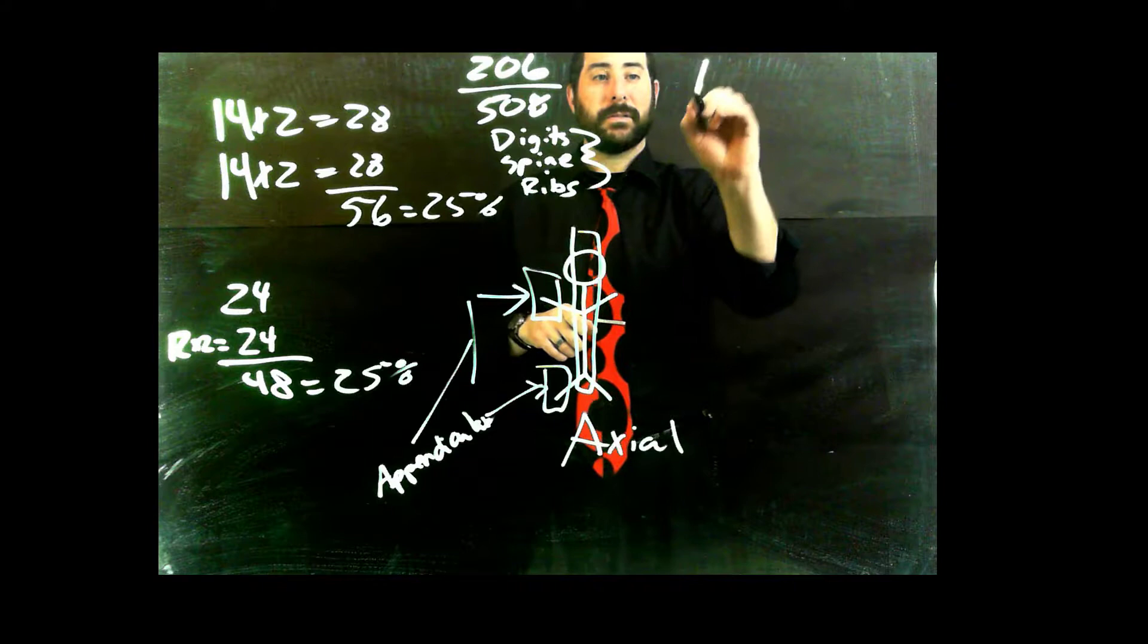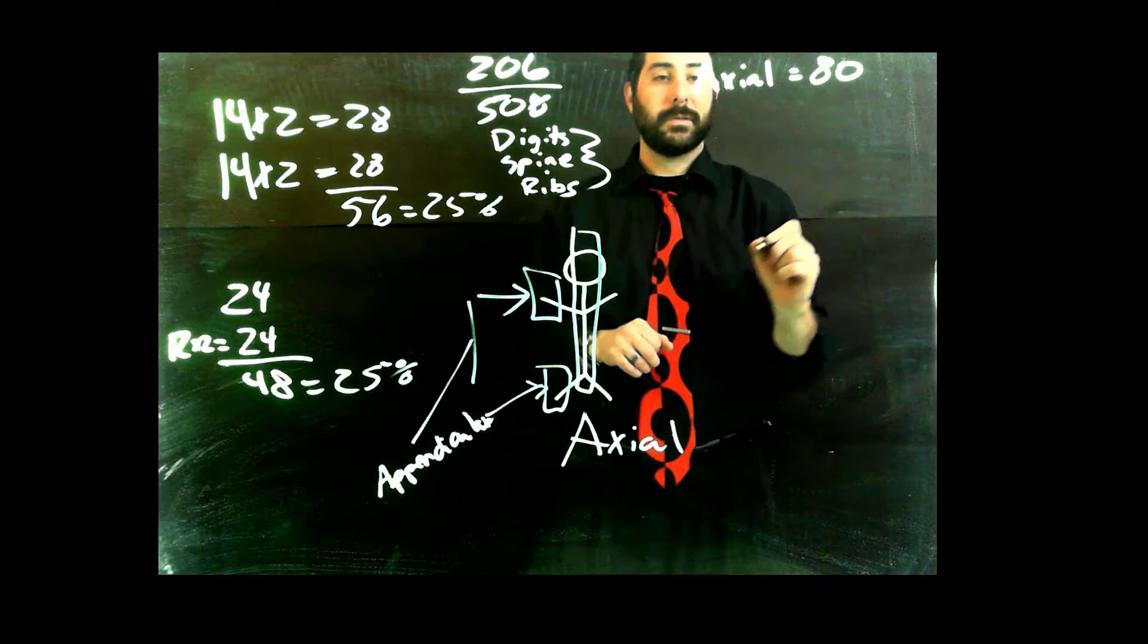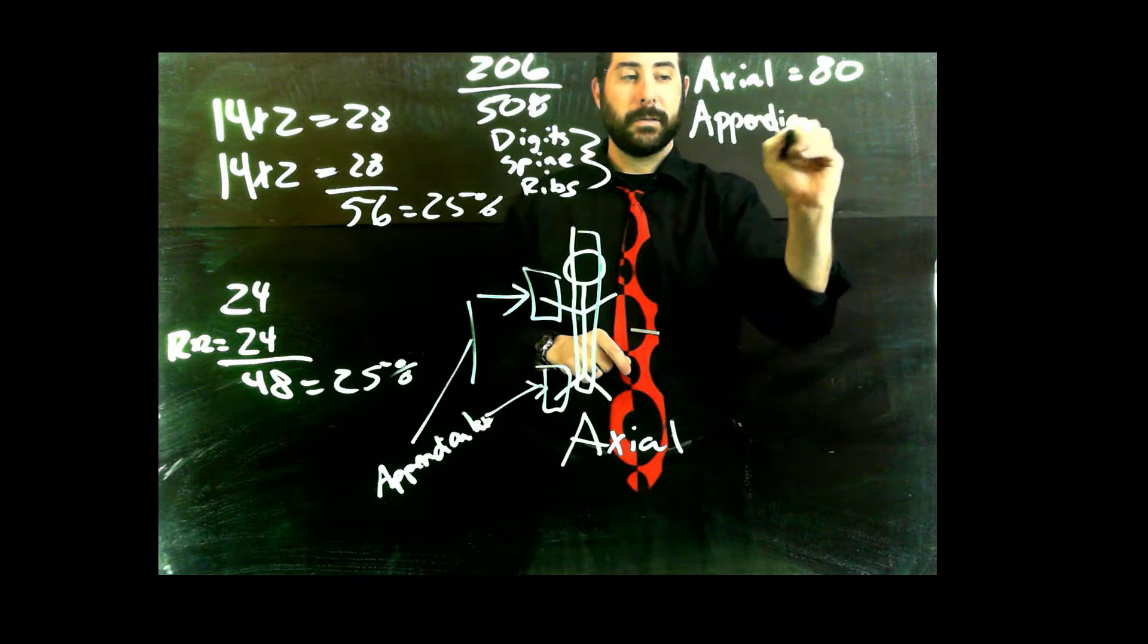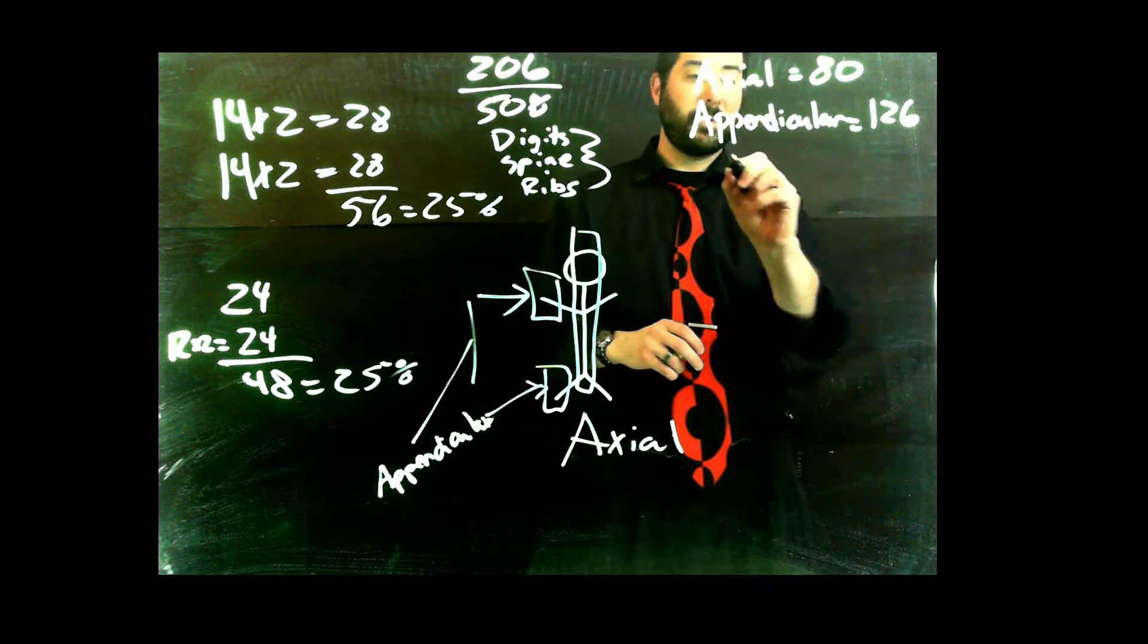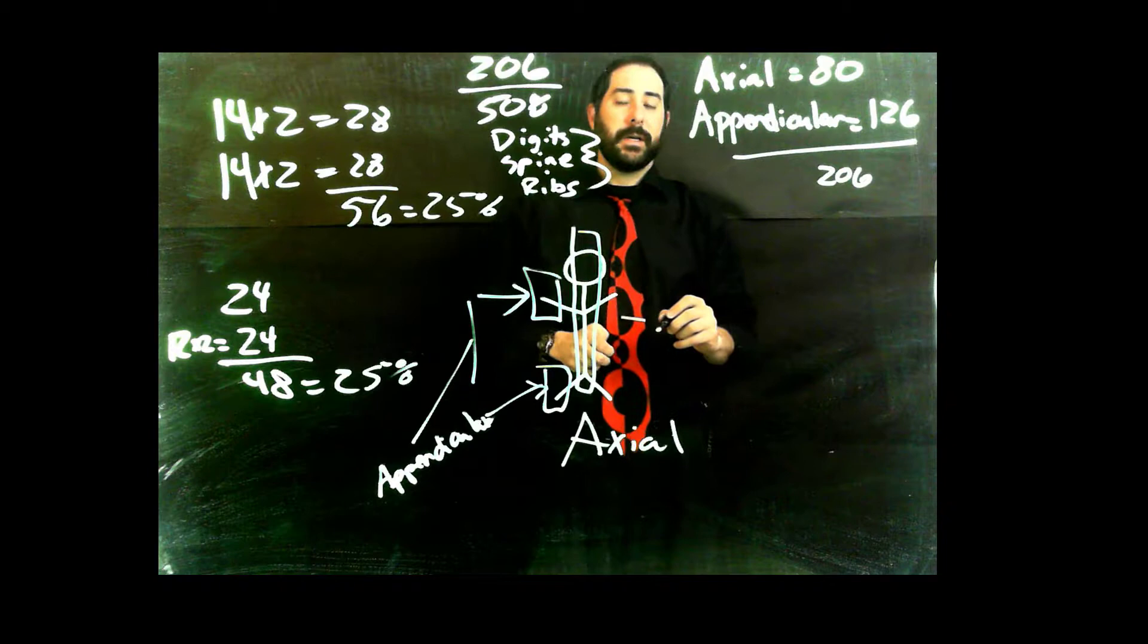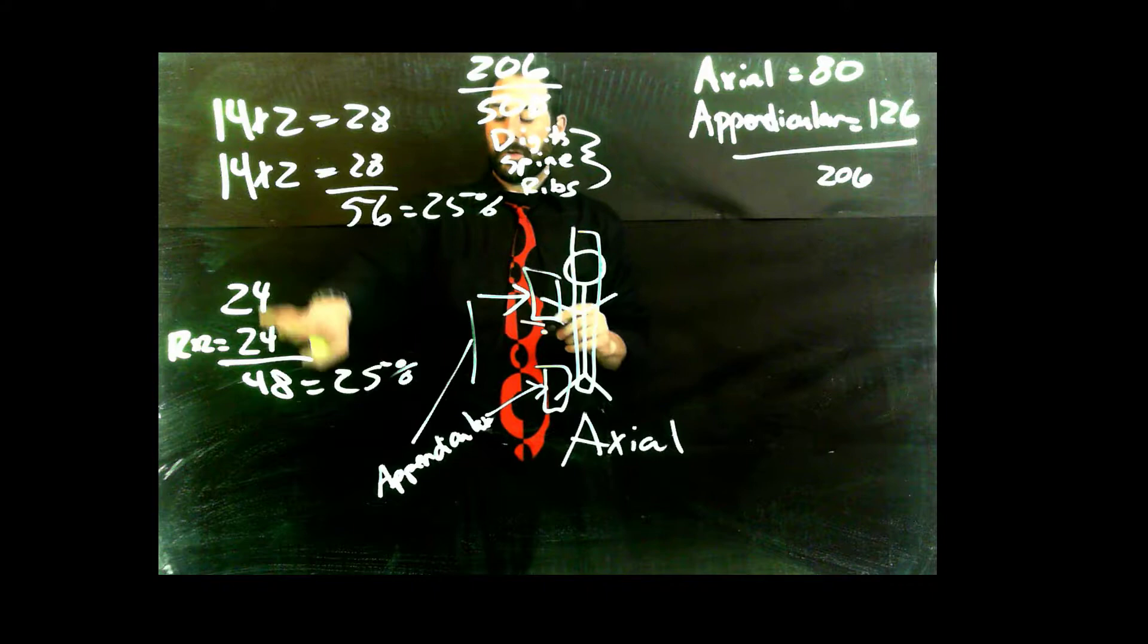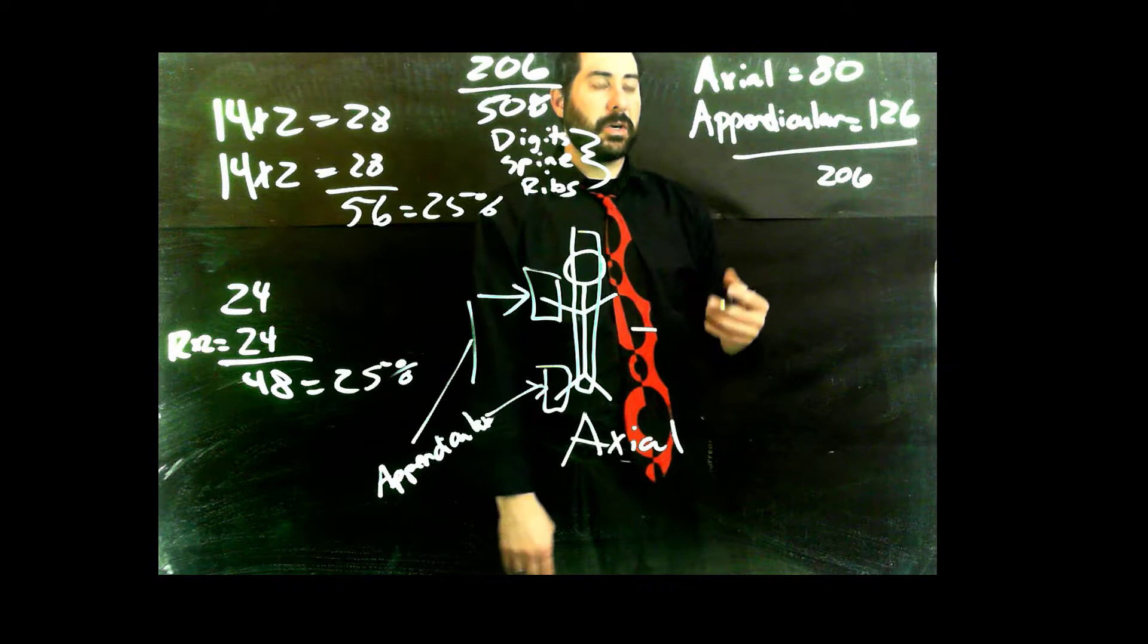Axial skeleton equals 80 bones. Appendicular equals 126. And of course, if you add that together, there's our 206. We already know a little bit about what's in that axial skeleton. That's our 48 bones of our spine and such. The rest of that makes up things like our skull. There's a lot of bones in our skull.